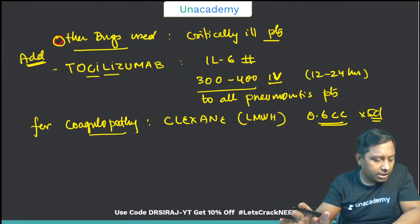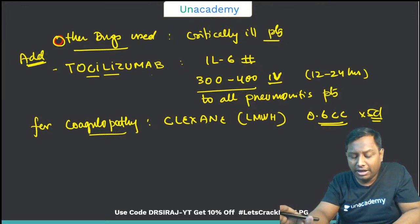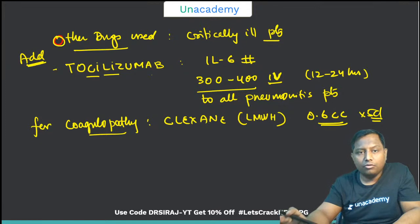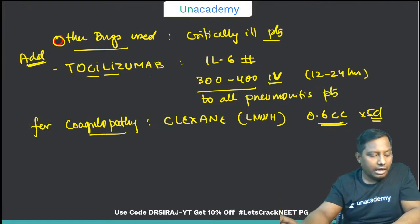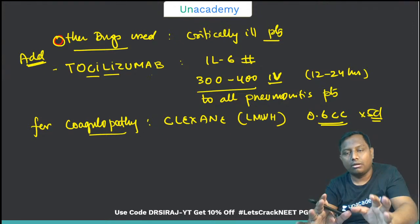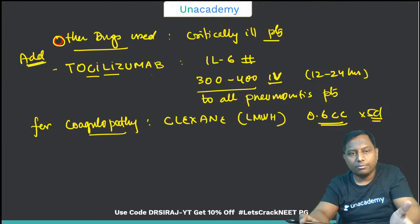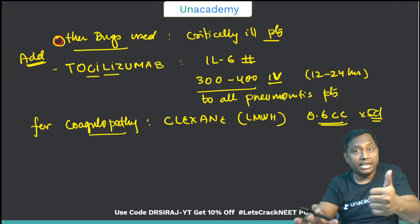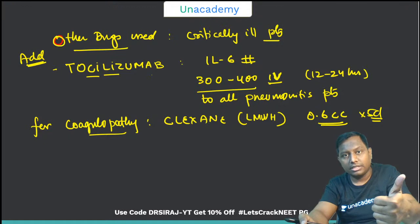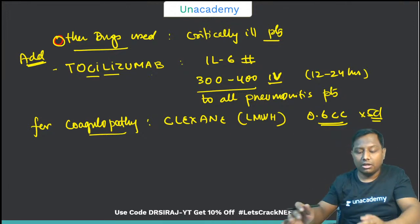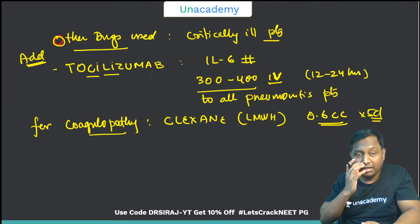There is no FDA-approved drug for COVID-19 so far. Most drugs have only been given emergency permission to continue. For prophylaxis — given only to healthcare practitioners in COVID wards — hydroxychloroquine 400 mg on day one, then 200 mg from day two onward. Additional highly recommended drugs: zinc 220 mg tablet, vitamin C, and vitamin D — these are for prophylaxis purposes.